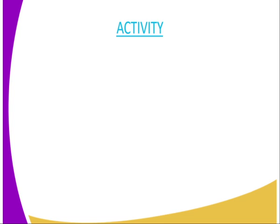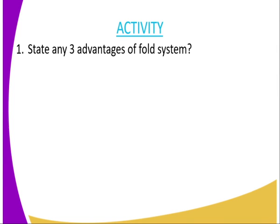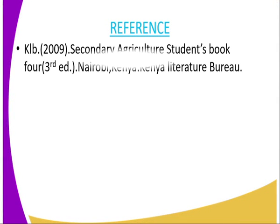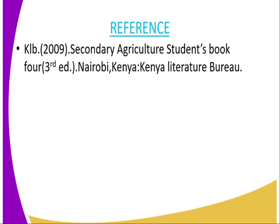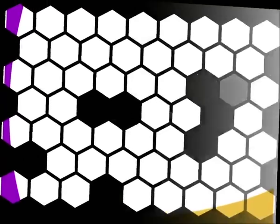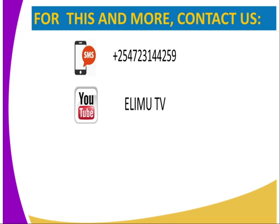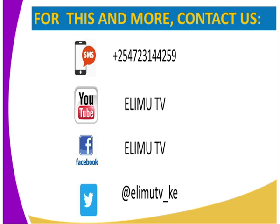We have now come to the end of today's lesson. I'm going to mark the end of this lesson by giving you an assignment. The first question: state any three advantages of the fold system. Number two: state any three requirements in a deep litter system. For reference, you can refer to the secondary agriculture student book, published by the Kenya Literature Bureau. For more information, you can reach us via SMS, YouTube at Elim TV, Facebook at Elim TV, or Twitter at Elim TV underscore KE.